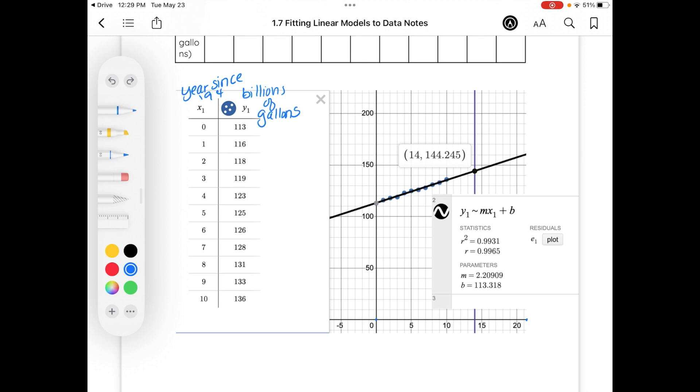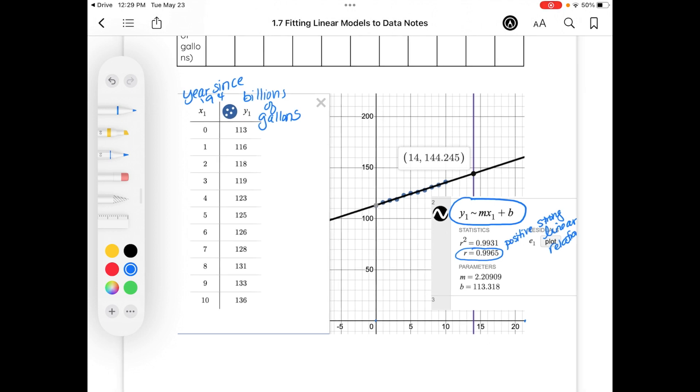All right. I then utilized on my next line, I did y sub 1 is about equal to mx sub 1 plus b. This does give us a strong, linear, positive relationship because it's even closer to 1 than the last example. And it's positive. So positive, strong, linear relationship.